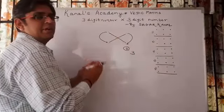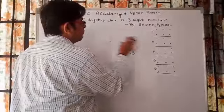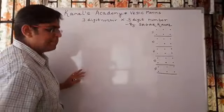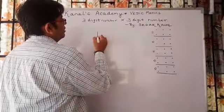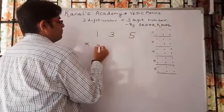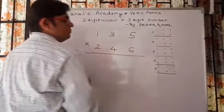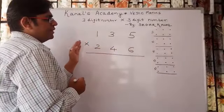That is the same basics that we are going to apply in three-digit multiplied by three-digit. Now let's take an example for three-digit number multiplied by three-digit number: 135 multiplied by 246.